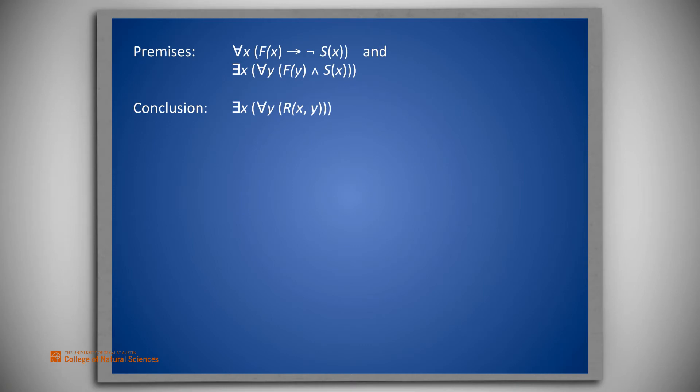Once again, symbolically, the premises are: For all x, f of x implies not s of x. And, there exists an x such that for all y, f of y, and s of x. The conclusion is, there exists an x such that for all y, r of x and y.